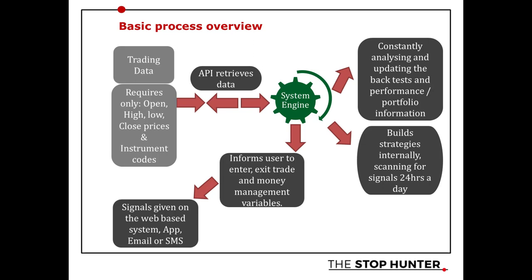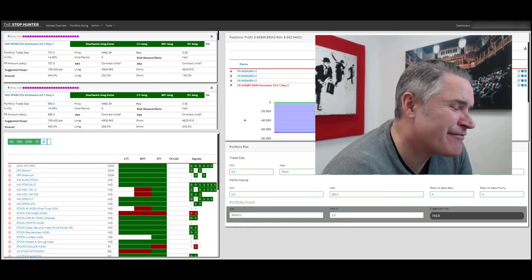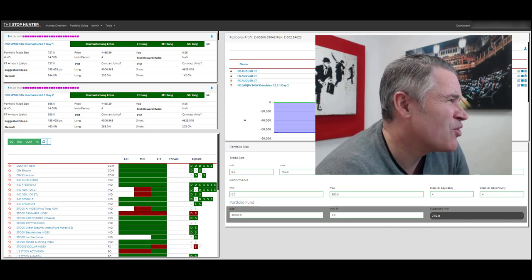Looking at the picture overview of the system: in the middle there's the system engine where all the number crunching and trade creation happens. It uses an API to retrieve trading data from a broker — all it needs is open, high, low, and close prices and the instrument codes. The system constantly analyzes and updates back-tests, portfolio information, and builds strategies internally, scanning signals 24 hours a day. It informs the trader whether to enter or exit, and signals are passed out via the web platform, app, email, or SMS.